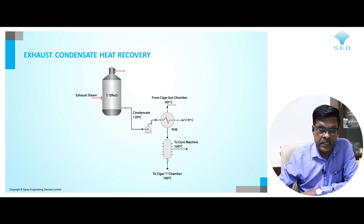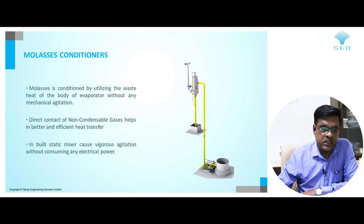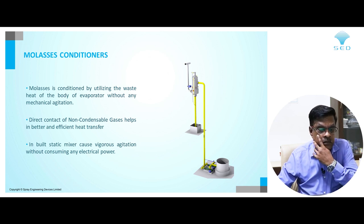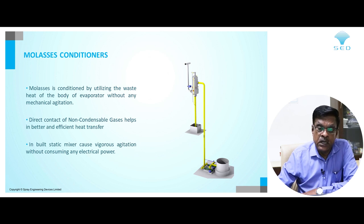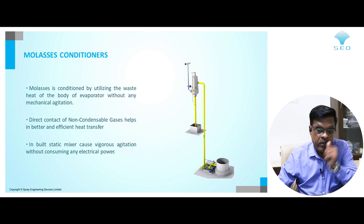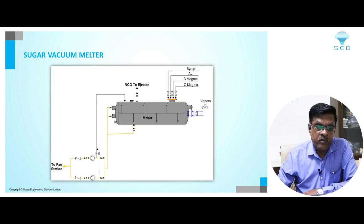A versatile molasses conditioner works on non-condensable gases and is connected to the vacuum system. Almost all non-condensable gases drawn from the evaporator system can be used so that all the heat energy is recovered from the system, and only the non-condensable gases escape through the vent to atmosphere. They also offer a sugar vacuum melter.